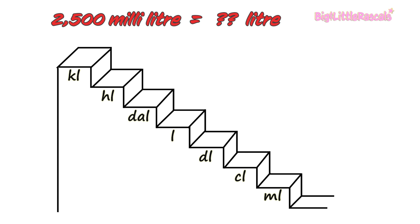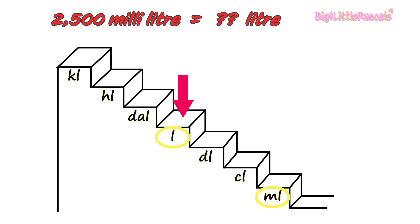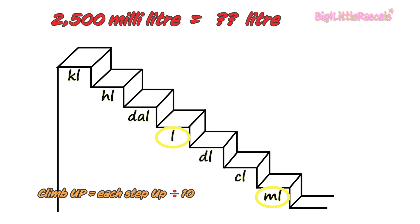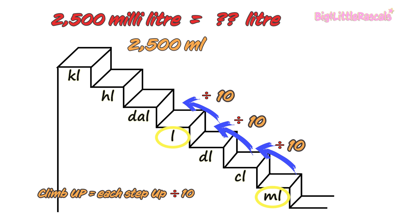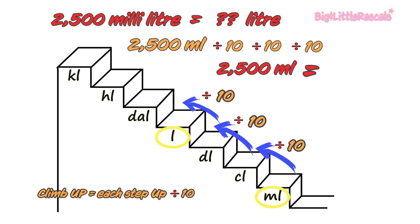Let's convert 2,500 milliliters to liters. First, find where milliliter is. There it is. Then find the liter. You need to jump up from milliliter to liter. Remember the formula: as you are climbing up, each step you jump up, you divide by 10. 1, 2, and 3 jumps. So 2,500 divided by 10, by 10, and by 10 — it gives you 2.5 liters. So 2,500 milliliters equals to 2.5 liters.